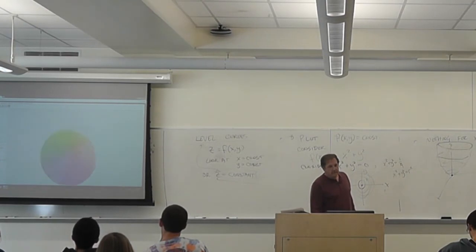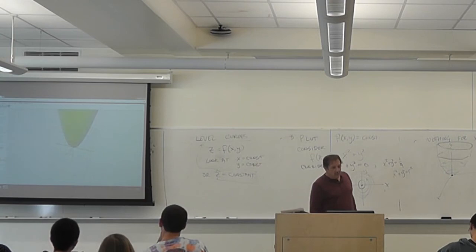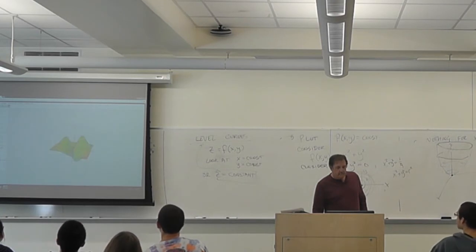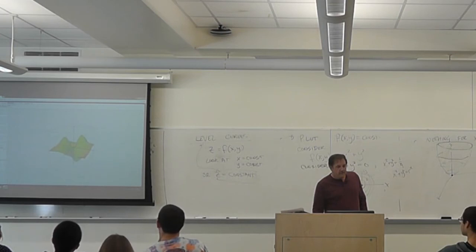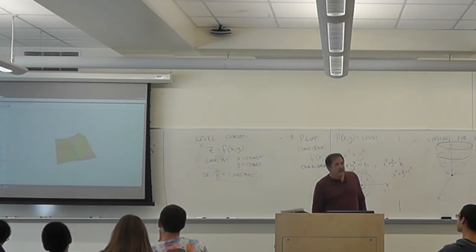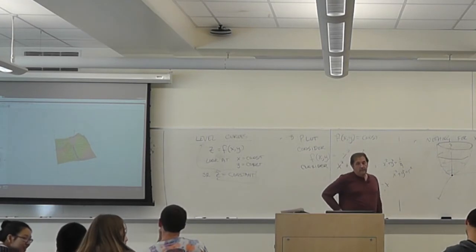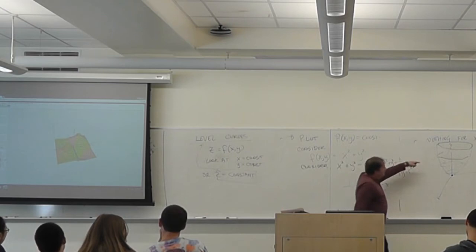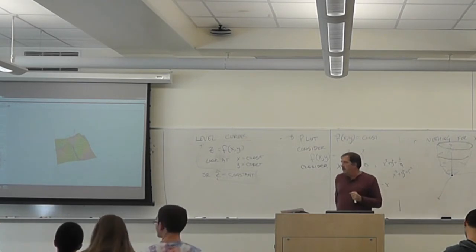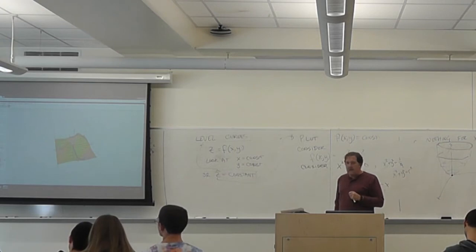For a more complicated function — the bumpy one — if I draw the contours, there they are. From the top it looks like a topographic map; from the sides you see them on the surface. If you want to walk on this surface without going up or down, these are the paths you would follow. This applet is from the graphing applet link on the course page, but you can also do this in Maple or Mathematica.